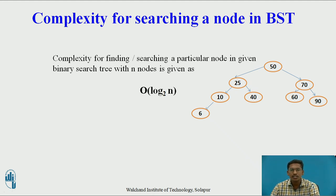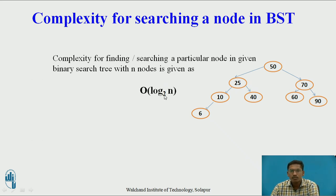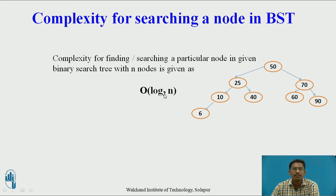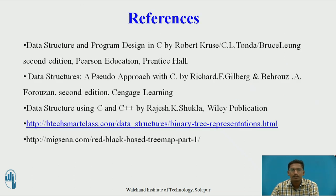What is the complexity of searching a particular node in a binary search tree? The complexity of searching a node in a binary search tree with n nodes is O(log n) to the base 2. The base is 2 because at each iteration you are discarding half of the tree. For example, when searching for 20: comparing from root, since 20 is less than 50, it should be on the left subtree — the right subtree is discarded. At each iteration, half the tree is discarded, giving O(log₂ n). These are the references used for this video. Thank you.